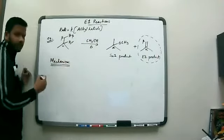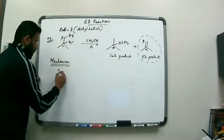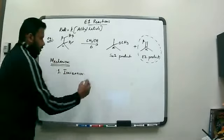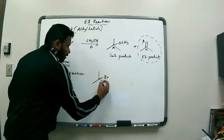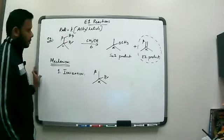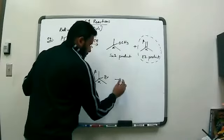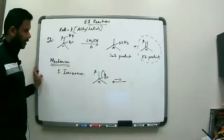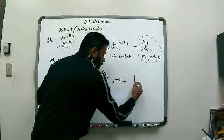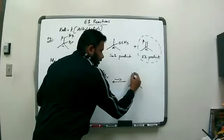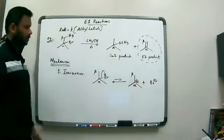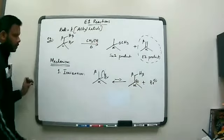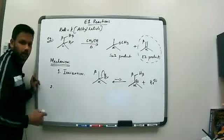Mechanistically, there is overlap between SN1 and E1 mechanisms. The first step is again an ionization. You have that alkyl halide with alpha and beta carbons, and the halogen leaves as a halide — the molecule ionizes to give us a carbocation at the alpha carbon plus the bromide. That's our first step. Since we're talking about elimination, that H-beta is really important. The first step is similar to an SN1 reaction.